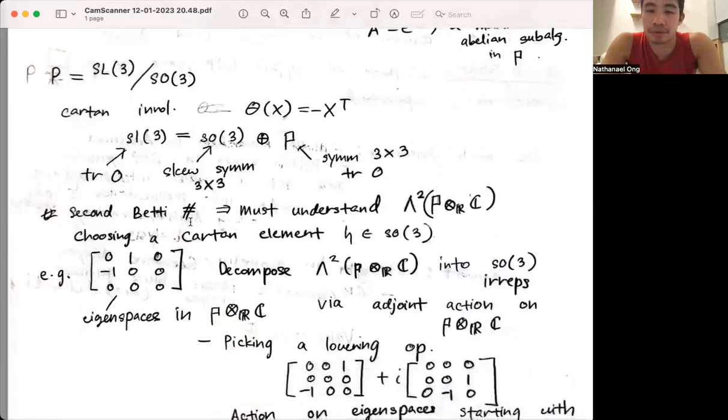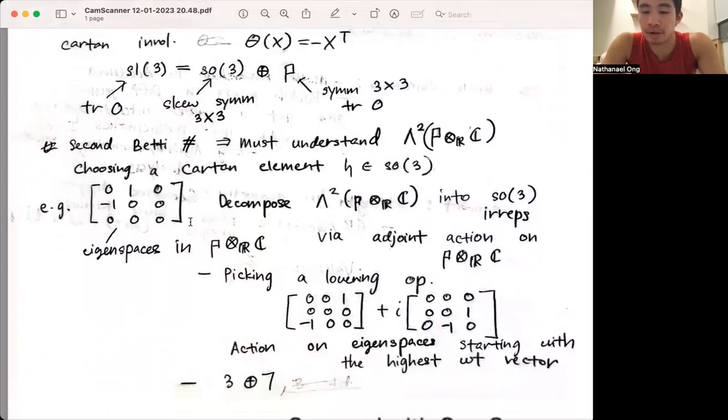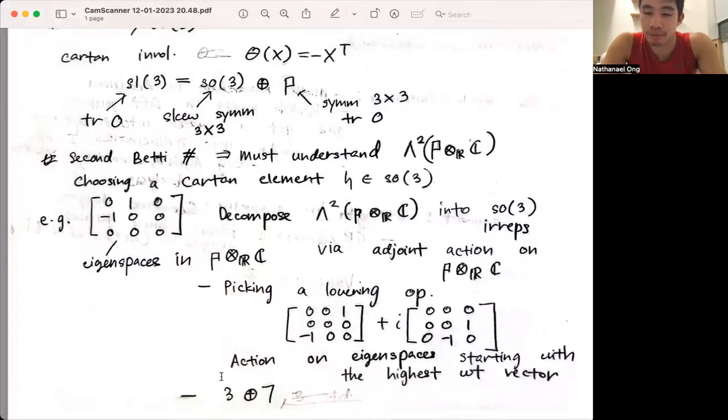I first chose a Cartan element in the Lie algebra of SO(3), and then via the adjoint action on the complexification of P, I was able to decompose the space. In particular, what I did was pick the lowering operator, as shown below, and consider its action on the eigenspaces, starting with the highest-weight vector.